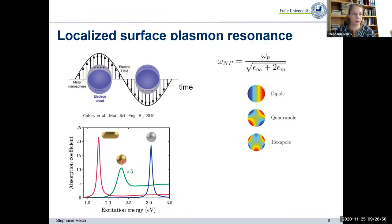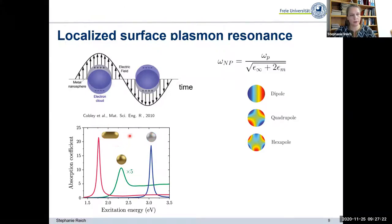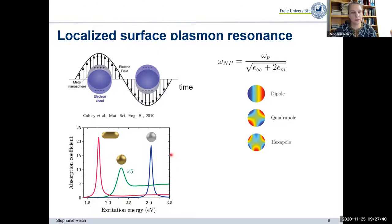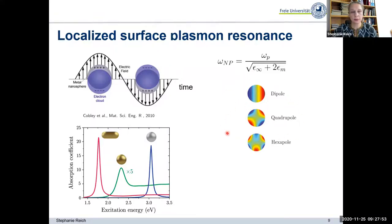You can change the frequency of this excitation: by changing the material — for silver, the plasmon excitation moves into the ultraviolet — or by changing the shape of your nanoparticles. If you use a nanorod instead of a sphere, it will shift to infrared frequencies. So you can play around a lot with where these specific resonances are situated. In addition to dipole excitations, you also have higher-order modes like quadrupole and hexapole modes, which I may mention at the end of the presentation.